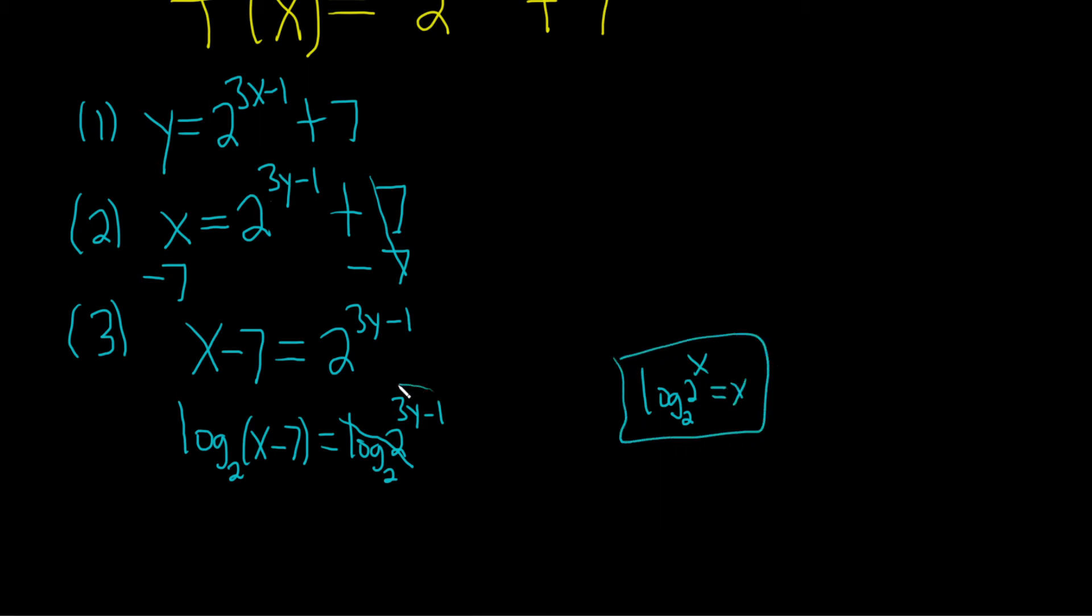So here this whole thing is our x. On the right-hand side, we just get 3y minus 1. On the left, we have log base 2 of x minus 7.